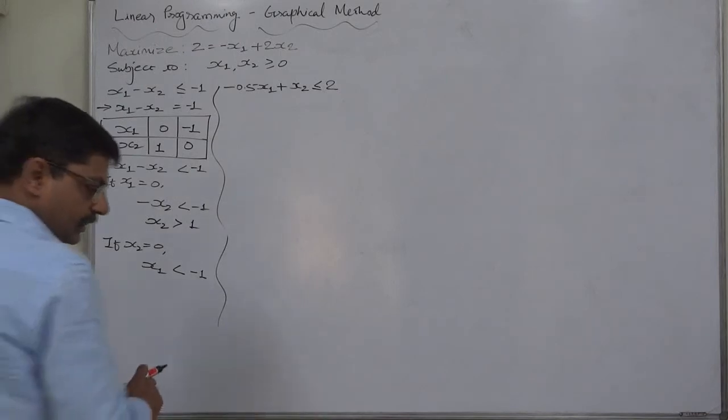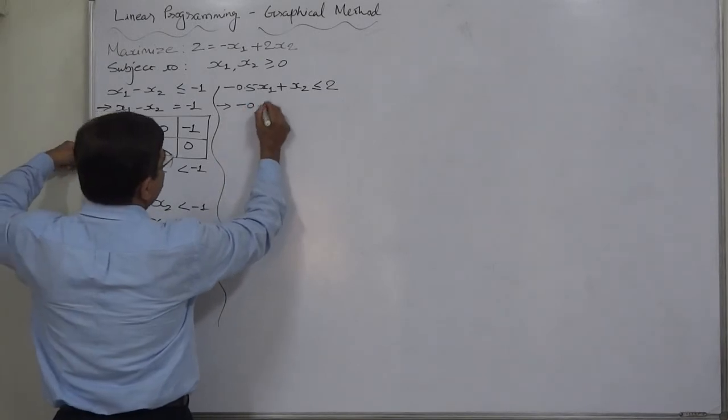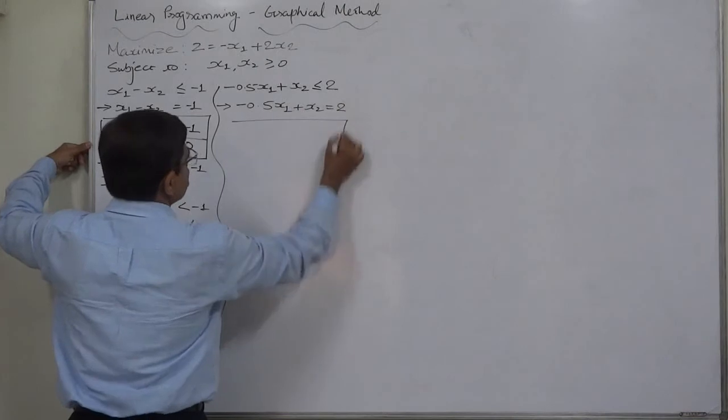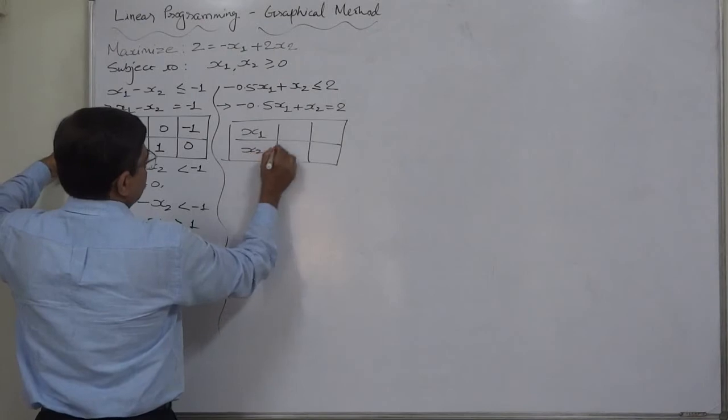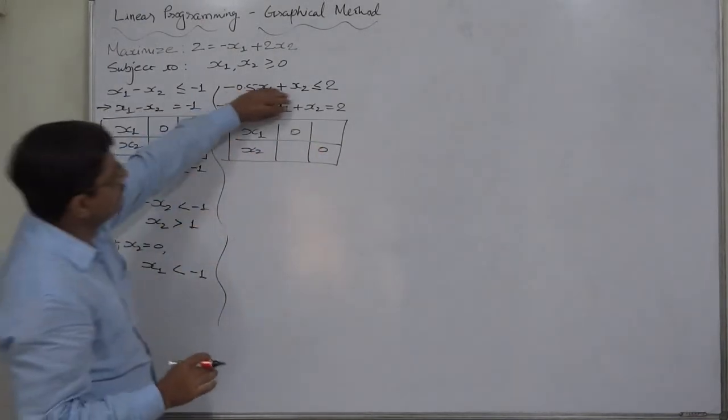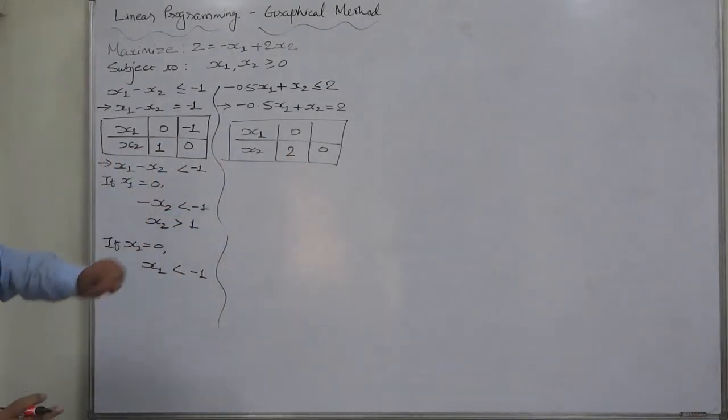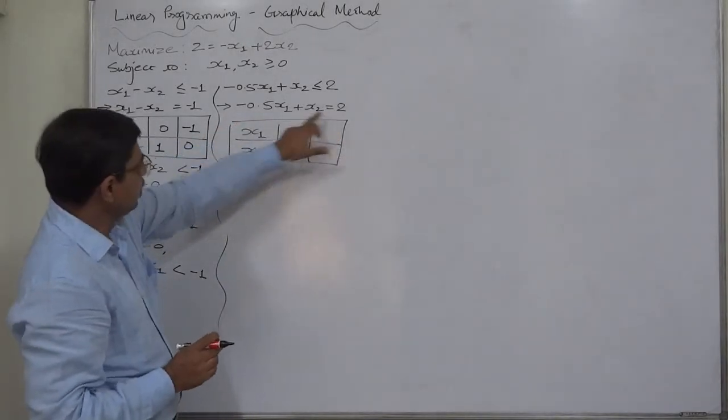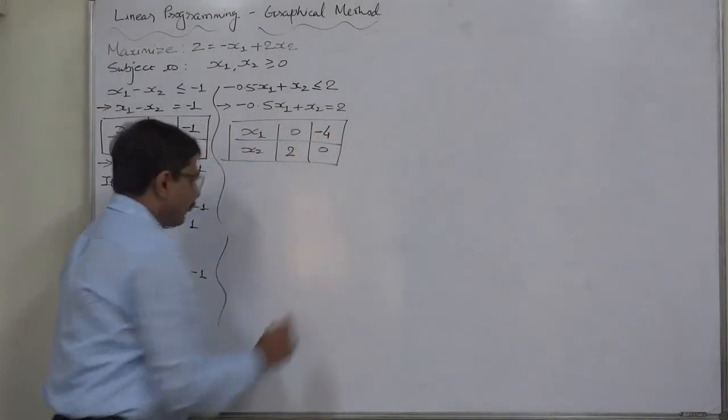Next, number 2, in term of equality: minus 0.5x1 plus x2 equals to 2 will be the equation. And now we can have the 2 points to get the straight line of this equation. If x1 takes value 0, then it will be x2 equals to 2. If x2 takes value 0, then it will be minus 0.5x1 equals to 2. That means x1 will be 2 divided by minus 0.5, that is minus 4.